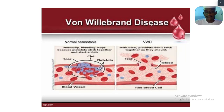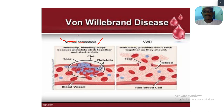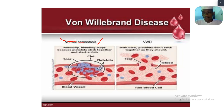This image shows von Willebrand disease alongside normal hemostasis. It's important to know the difference between hemostasis and homeostasis. Hemostasis is the blood clotting process, while homeostasis is the maintenance of a relatively normal body environment or temperature. Hemostasis refers specifically to blood clotting.